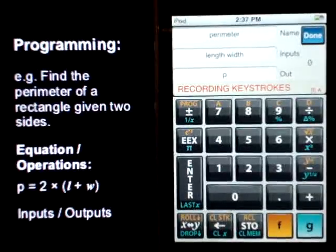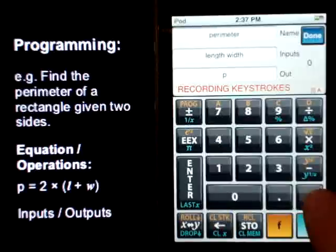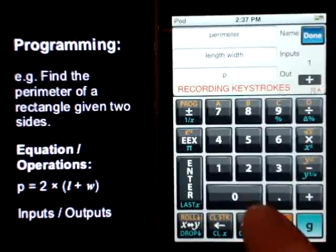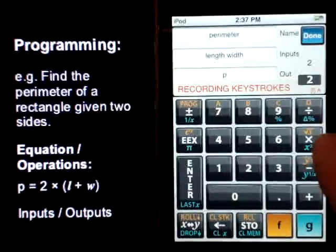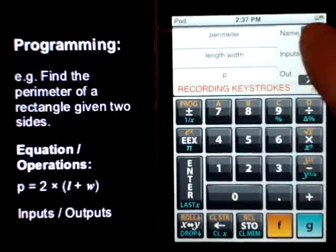We're starting to record keystrokes here. We've got length and width sitting in the stack for us. We'll do the same thing we did before. We'll add them. We put in a 2. And we multiply. That will show us the perimeter. So, we are done.